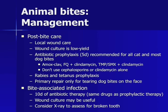Management of cat and dog bites involves local wound care and infection prophylaxis. Wound culture is of low yield. Antibiotic prophylaxis is recommended for all cat bites and most dog bites. Only three oral antibiotics may be used: amoxicillin-clavulanic acid, a fluoroquinolone plus clindamycin, or trimethoprim-sulfamethoxazole plus clindamycin. Monotherapy with cephalosporins or clindamycin alone may not be used. Primary repair with sutures should only be considered for tearing dog bites to the face; cat bites should never be sutured.